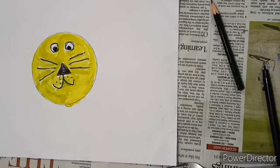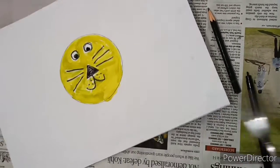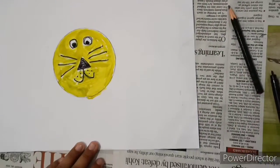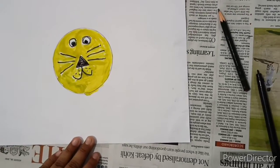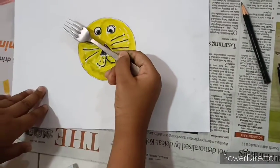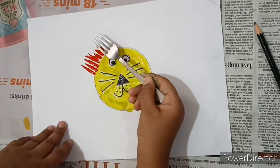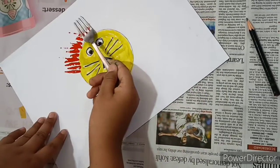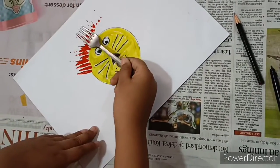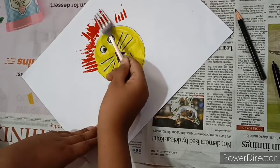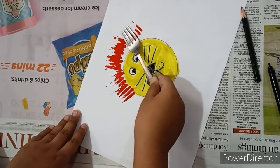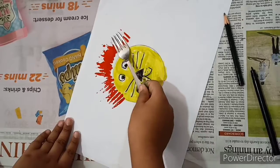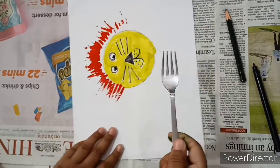Now let's draw the hair around it. Let's take the fork and dip it in red color.